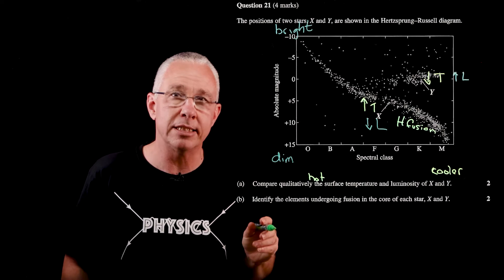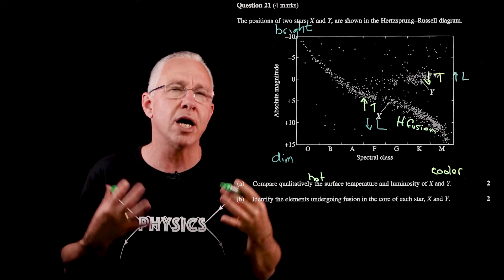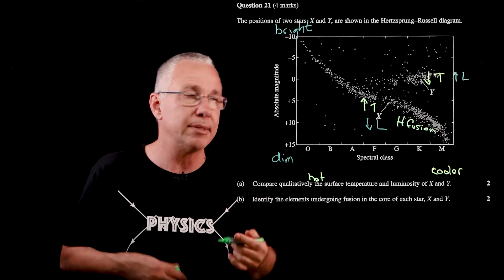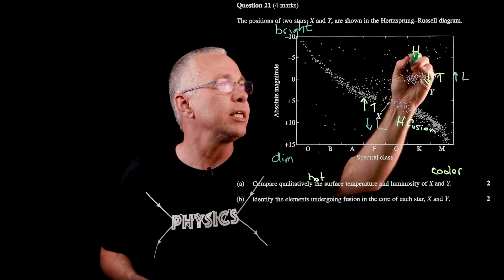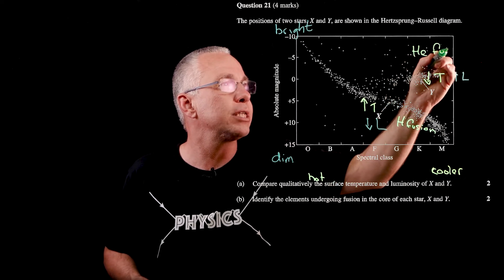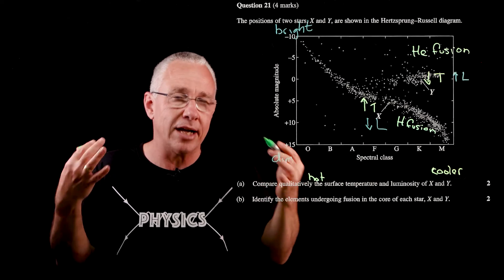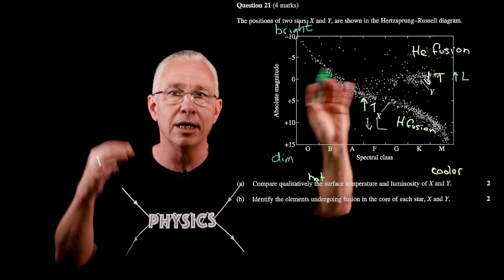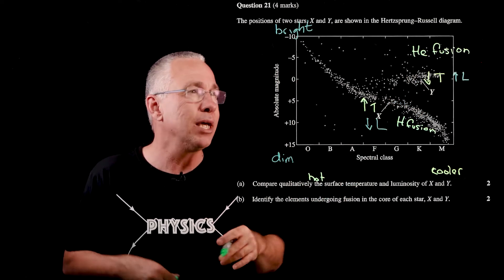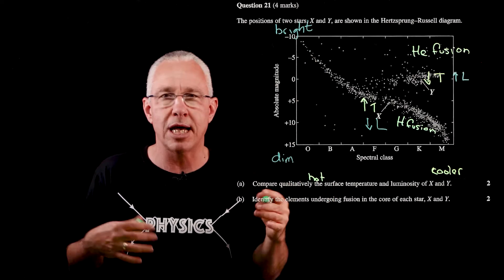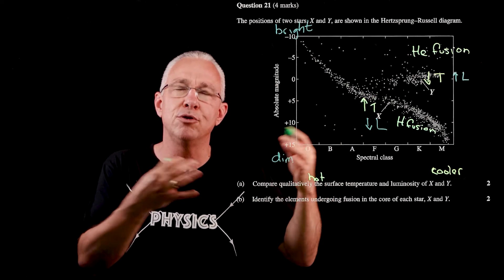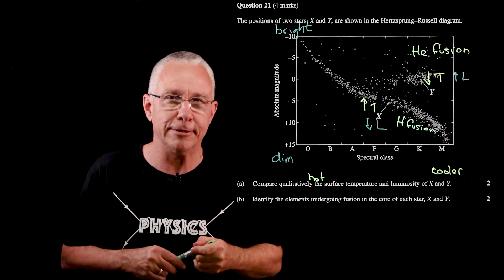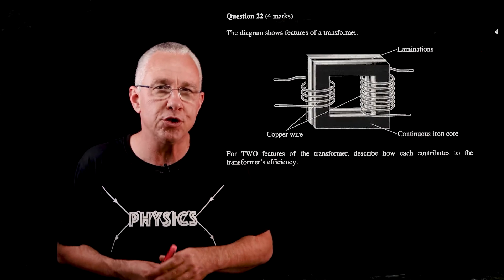So for star X, hydrogen fusion is taking place. For the giant stars like Y, most of the hydrogen has been depleted and the star starts to fuse heavier elements — the key one at this level is helium fusion. In reality other elements are also being fused up to carbon for smaller massive stars, and in supermassive stars in the supergiant phase, fusion can go all the way up to iron. But these are the two key differences at this level.